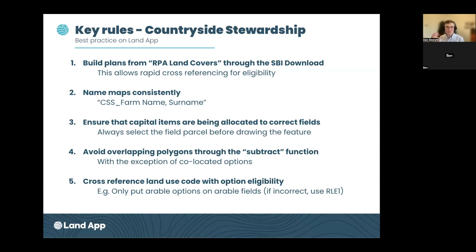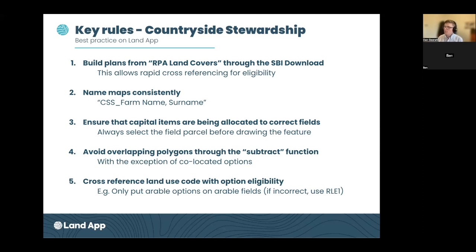Rule number two — particularly important if you're an advisor doing multiple applications in one year — please just name your maps consistently, rather than calling them all 'Countryside Stewardship 2023'. Use a consistent structure; I recommend, for example, CSS underscore farm name underscore surname to keep the data tidy. Rule number three: ensure that your capital items are being allocated to the correct fields. This is one of the biggest errors we see. Always select the field parcel you want the capital item allocated to before drawing it.